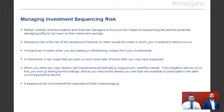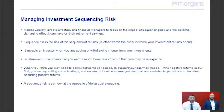Once shares are sold, they can no longer undertake their normalised investment return process through recurring or positive returns. The easy way to explain it is that sequencing risk is effectively the opposite of dollar cost averaging.